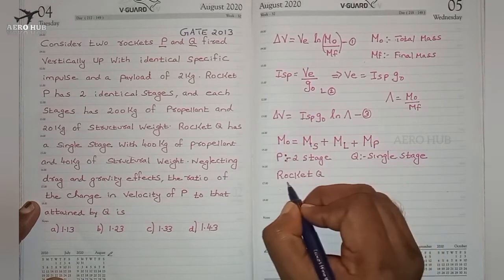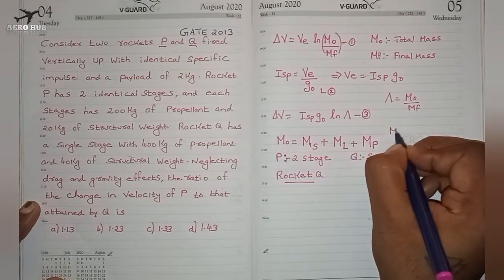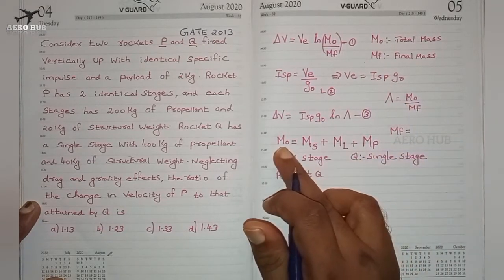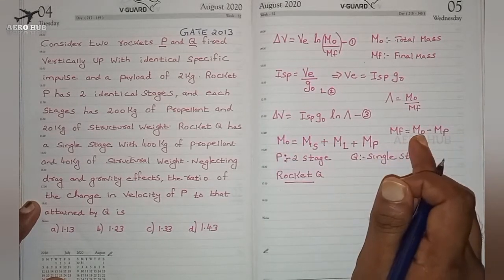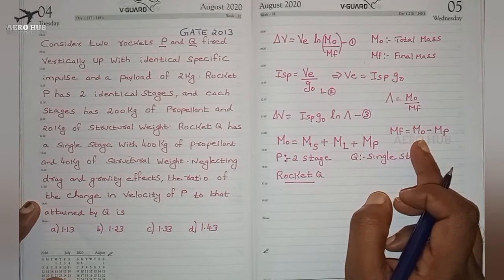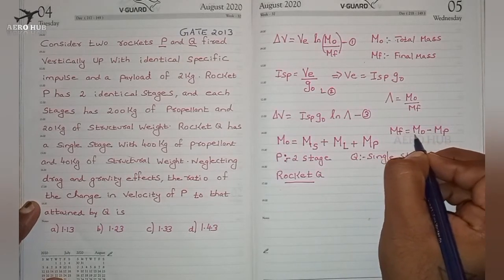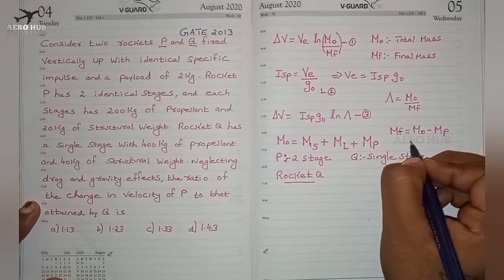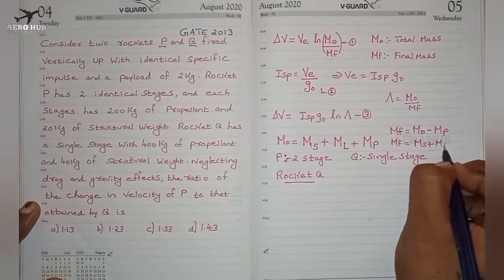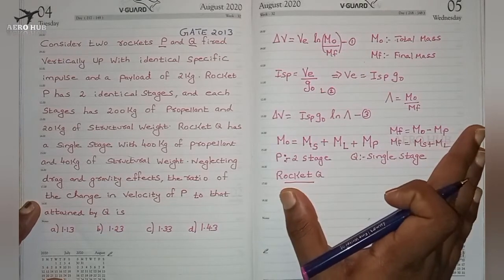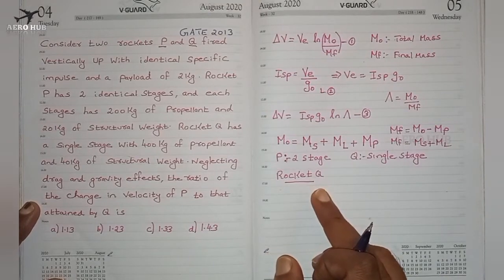First, let's look at single-stage rocket Q. When propellant is consumed — propellant being the combination of oxidizer and fuel — the final mass MF equals M0 minus the propellant mass, which is the summation of structural mass and payload mass. These are the fundamentals needed to solve this problem. Rocket Q is a single-stage rocket.